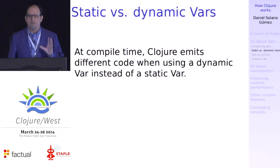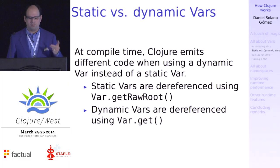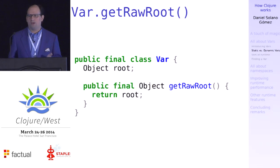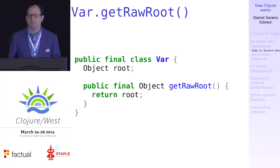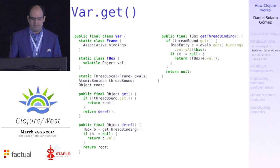So what's going on? At compile time, when you use a VAR, Clojure compiles different code depending on whether you're using a static or a dynamic VAR. A static VAR calls `getRawRoot`, while a dynamic VAR calls `get`. Looking at the Clojure source, `getRawRoot` is exceedingly simple — you just return the root binding. But `var.get` is a lot more complicated: you have to check if there's a thread-local binding, figure out what it is, and return it.